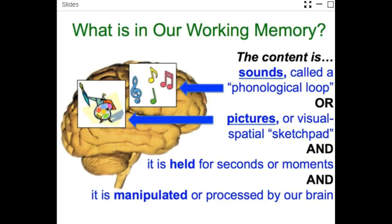Working memory would be reassembling things in your head. For example, if I gave you three letters — B, C, A — and said rearrange those in your head to make a word out of it, hopefully you came up with the word CAB, C-A-B. That's an example of using working memory.